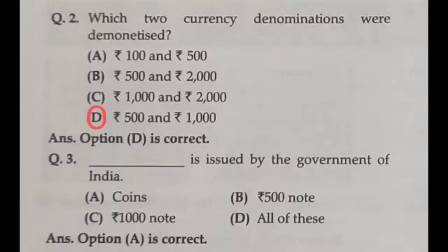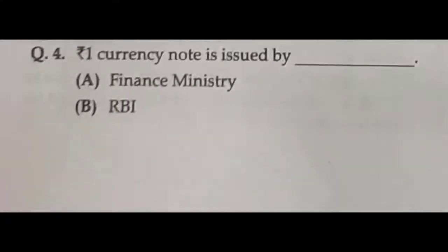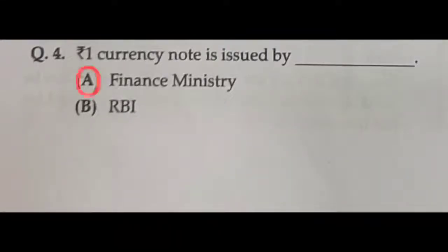Question three: coins are issued by the Government of India — it is the sole responsibility of the Government of India to mint coins of all denominations, so option A is correct. Question four: Rs. 1 currency note is issued by — actually it is issued by the Finance Ministry and must be signed by the Finance Minister. So the Finance Ministry is the correct answer — option A is correct.